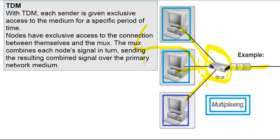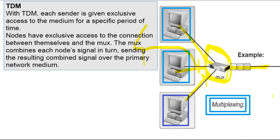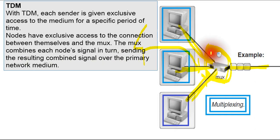With TDM — Time Division Multiplexing — each sender is given exclusive access to the medium for a specific period of time. Every node has exclusive access to the connection between itself and the MUX. The MUX then combines each node's signal in turn, sending the resulting combined signal over the primary network medium. So each node gets full access between itself and the multiplexer for its allocated time slot.